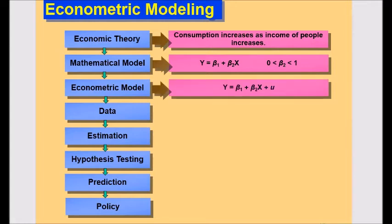Specification of the econometric model. Mathematical model of the consumption function given in above equation is deterministic in nature. An econometrician would modify the deterministic function to Y is equal to beta 1 plus beta 2 X plus u, where u,